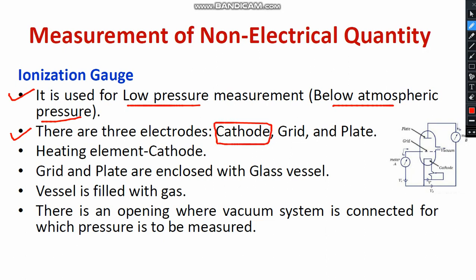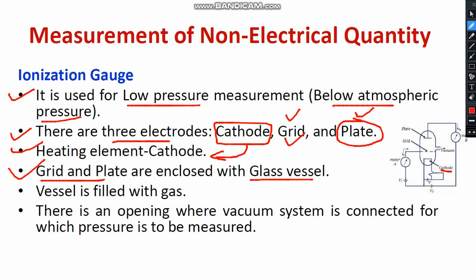There are three components in the ionization gauge. The first one is called the cathode, the second is known as the grid, and the third is known as the plate. These are the three major electrodes — all made up of conductors. The speciality of the cathode is that it acts as a heating element. The remaining electrodes — the grid and plate — are enclosed in a glass vessel.